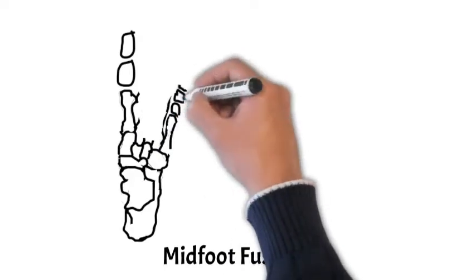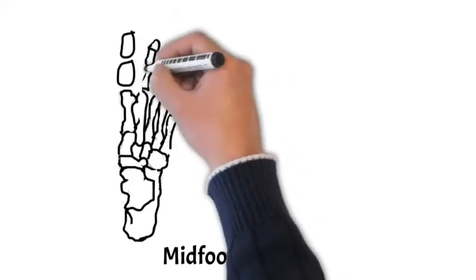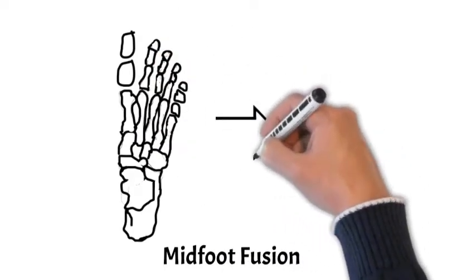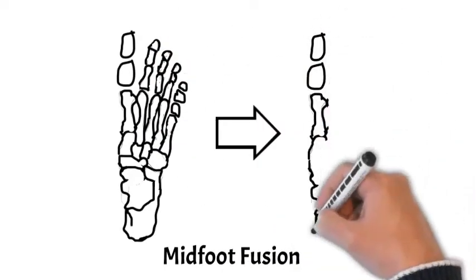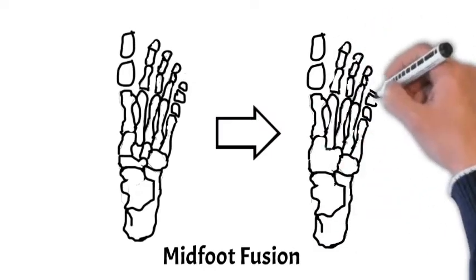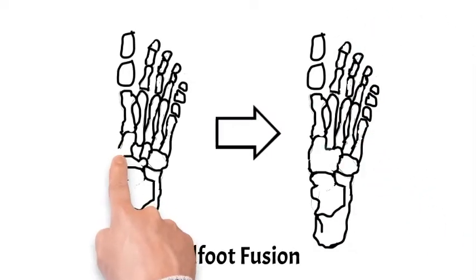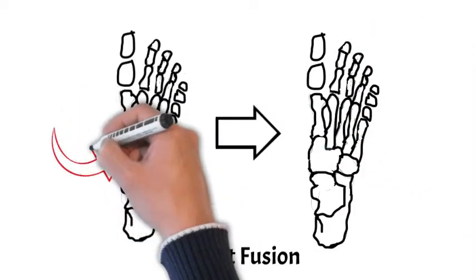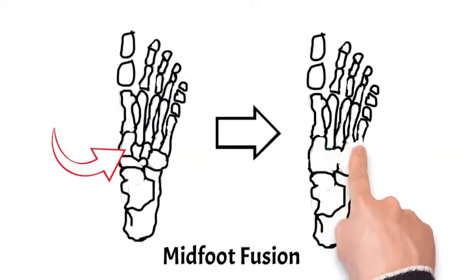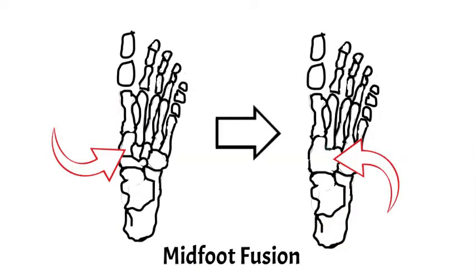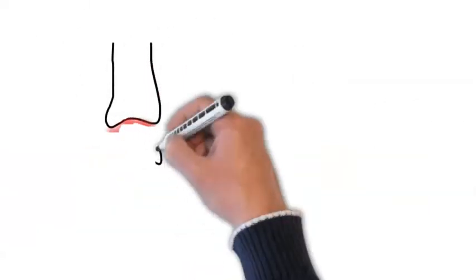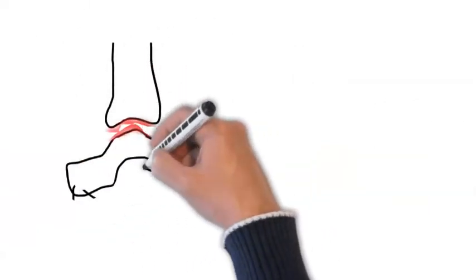The other type of operations discussed are midfoot operations, and midfoot fusion is one of those. The diagram on the left shows the foot from the top, and the diagram on the right shows it with the fusion. The red arrow marks multiple bones in the middle of the foot, whereas on the right, at least four or five have been made into one bone — that's a midfoot fusion, usually done for osteoarthritis.